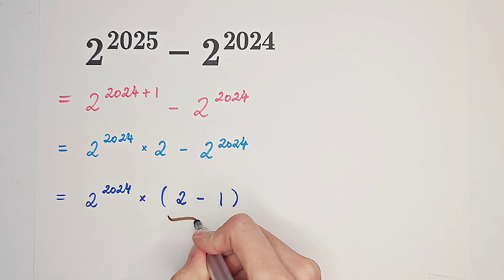Because we know that 2 minus 1 is equal to 1.